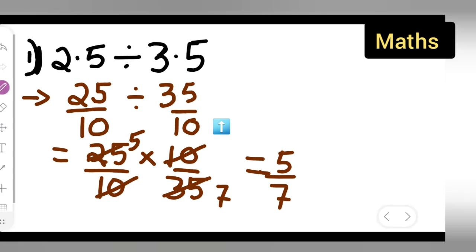So this is your final answer, 5 upon 7. I hope you all have understood how to divide 2.5 divided by 3.5. Thanks for watching. If you have any doubts or queries, you can comment below. Don't forget to like, subscribe to my channel, and share with your friends. Press the bell icon for more updates.